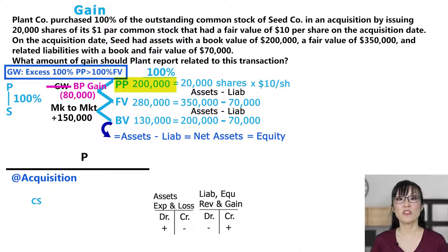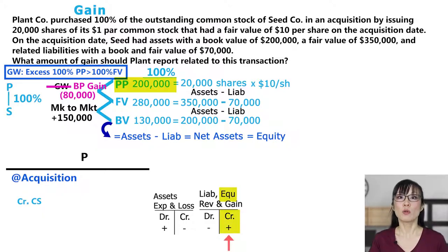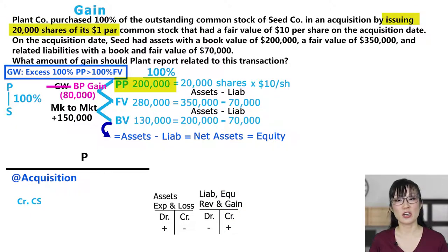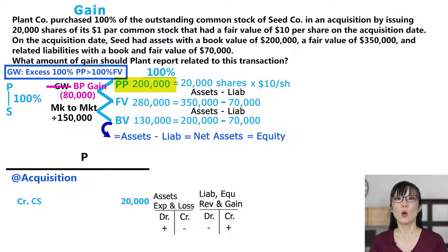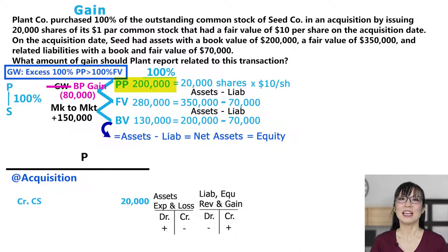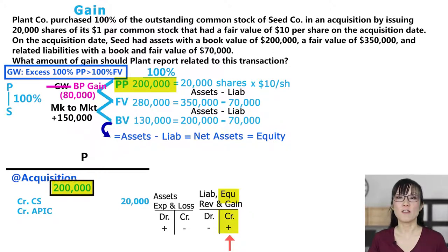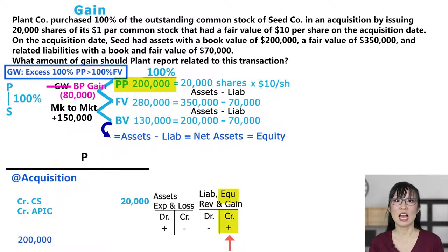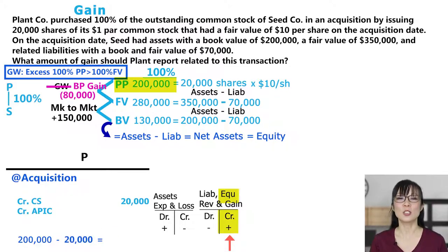Plant is issuing $200,000 worth of common stock. Common stock is an equity account and it's increasing, so that's a credit. Common stock only includes par — Plant issues 20,000 shares with a $1 par, so 20,000 times $1 equals $20,000. The rest of the $200,000 goes to additional paid-in capital, or APIC. APIC is an equity account and it's increasing — that's a credit. The amount is the fair value of the stock, $200,000, less the $20,000 already in common stock, which equals $180,000.